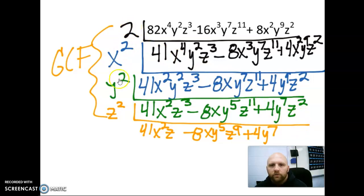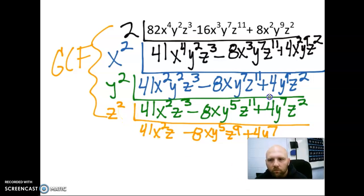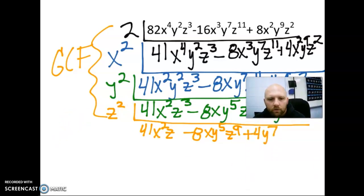Our GCF would be all of these things on the outside multiplied together. Again, if you can do that at one time, we could have done this in one step. That would have been fine. Totally up to you if you want to do it in one step or if it's going to take you multiple steps. So now we would write our answer.